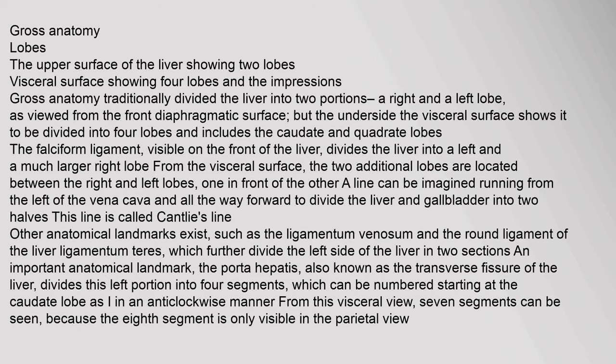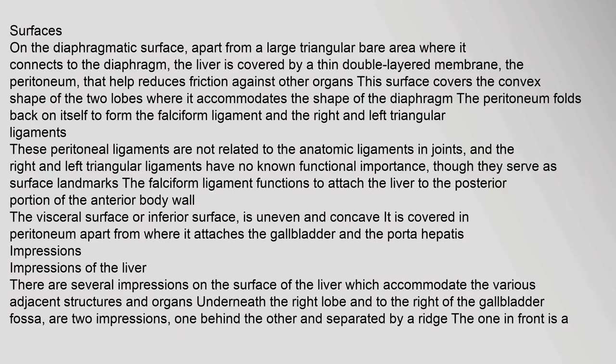Seven segments can be seen from the visceral view because the eighth segment is only visible in the parietal view. On the diaphragmatic surface, apart from a large triangular bare area where it connects to the diaphragm, the liver is covered by a thin double-layered membrane — the peritoneum — which helps reduce friction against other organs. The peritoneum folds back on itself to form the falciform ligament and the right and left triangular ligaments.